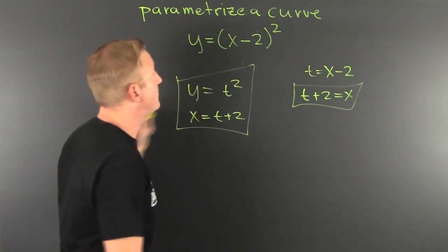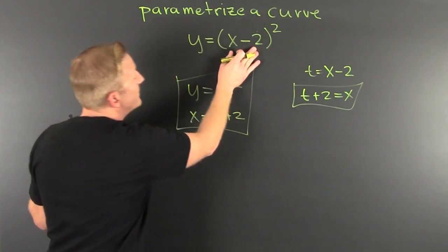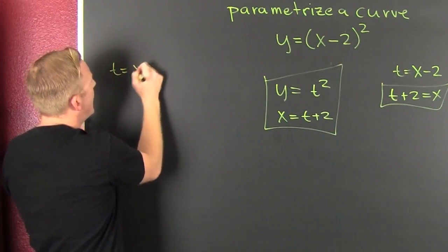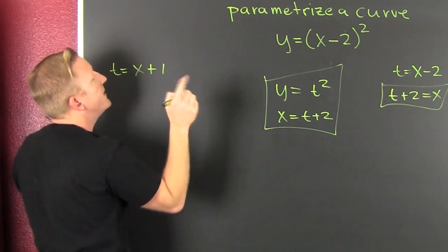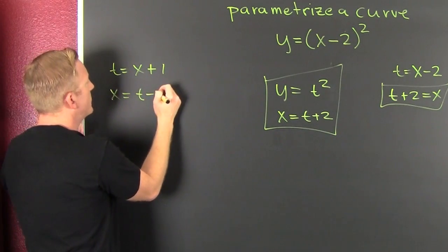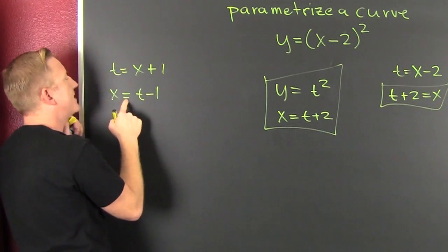There's infinitely many more. I can go and I can even, I don't know, say let T equal X plus 1. Then, if T is X plus 1, then X is equal to T minus 1. All right, that's one.